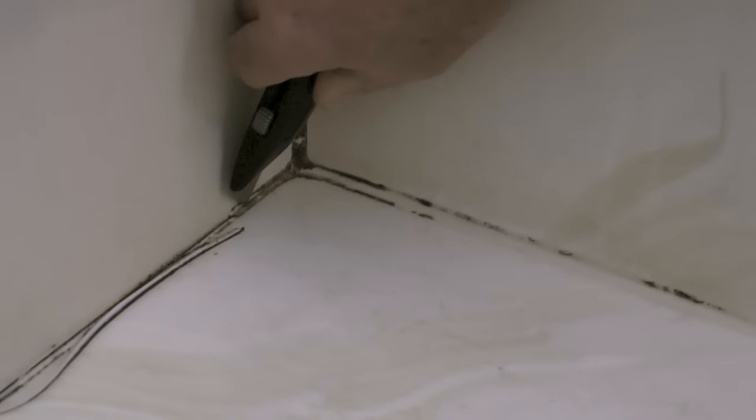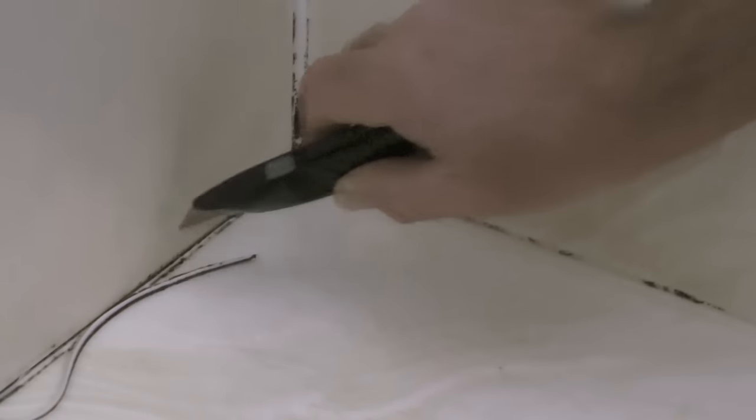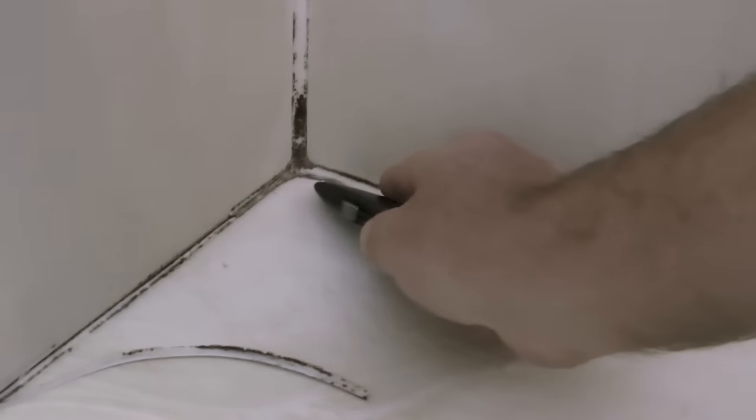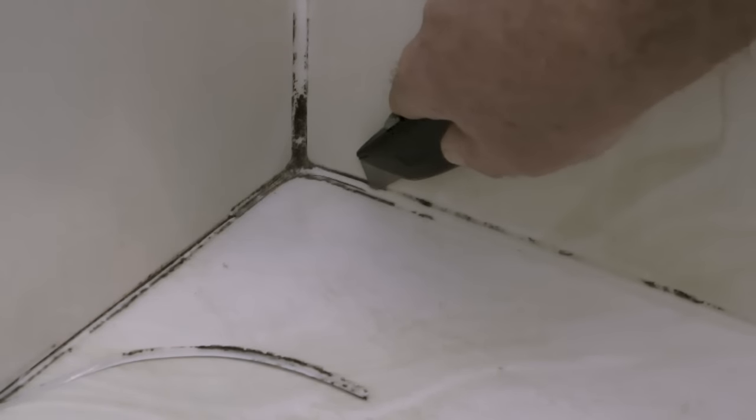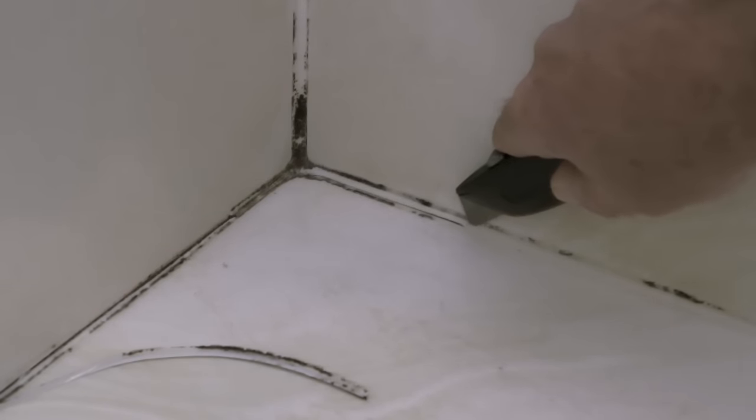Then I will take my utility knife and make a second cut on the upper side of the silicone and as you can see the old moldy silicone will pop away from the seam between the shower wall and the shower floor. I will repeat this process on all of the old moldy silicone in the shower.